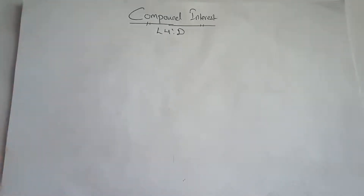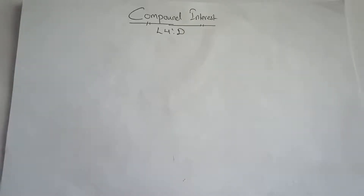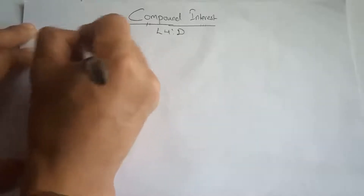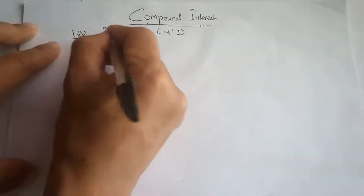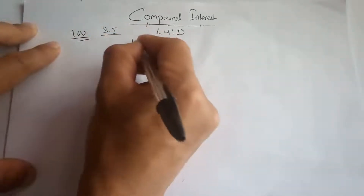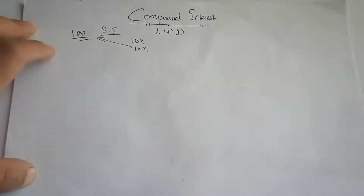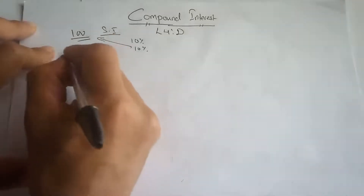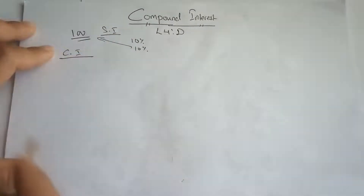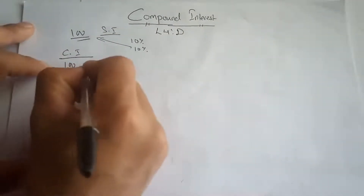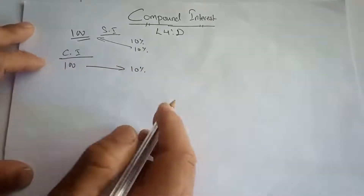In terms of simple interest, every year 10% interest is charged on the original 100 rupees. In terms of compound interest, every year 10% interest is still charged, but on a changing principal. First year, 10% on 100 rupees under compound interest.